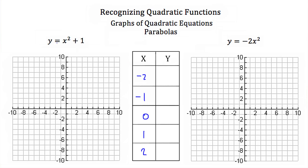If I plug in negative 2 into this equation for x, we'll have negative 2 squared plus 1. Negative 2 squared is 4 plus 1, so that's equal to 5, so our y is 5. If I plug in negative 1 for x, negative 1 squared is just positive 1, and if we add 1, our y is 2. If I plug in 0, 0 squared is still 0 and then we add 1, so our y would be 1. If I plug in 1, 1 squared is 1 plus 1, and we'll have 2 again. If we plug in a positive 2 for x, 2 squared is 4 plus 1, so 5 again.